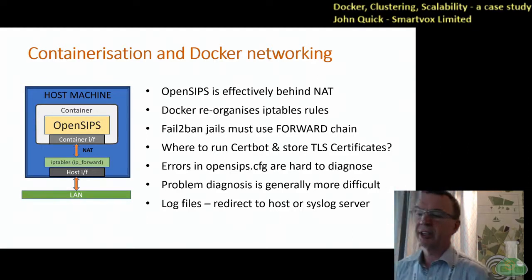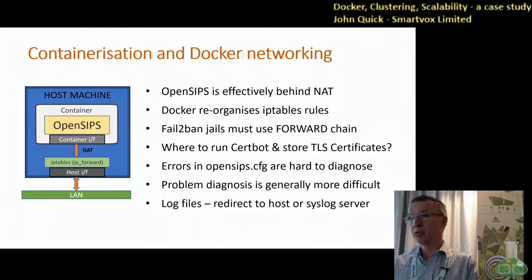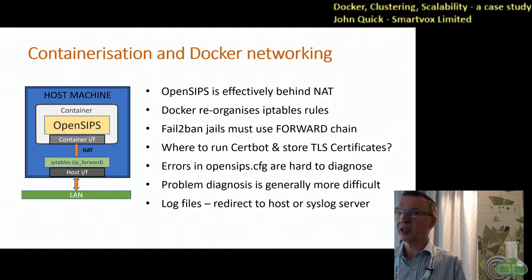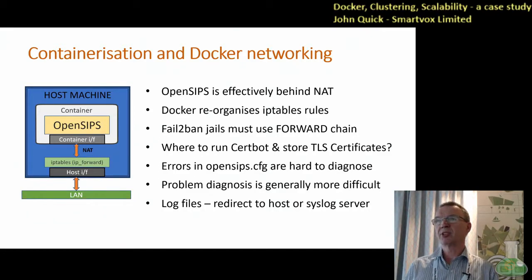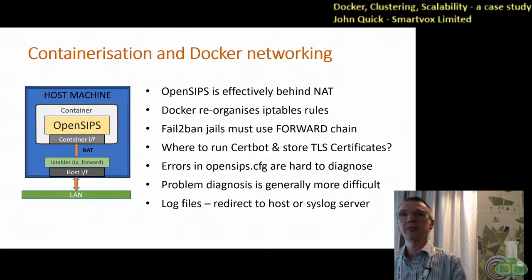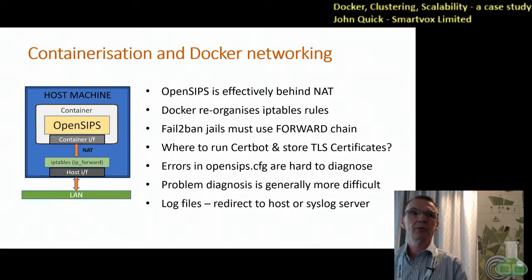The Docker networking really does give you some issues to deal with. Effectively your OpenSIPS is behind that NAT. It reorganizes iptables, so the Fail2Ban that I was using — you had to put the ban into the FORWARD chain, not into the INPUT chain, which needed a little bit of fiddling with. I had problems with where to put my TLS certificates being fetched by the cert bot. And it's quite difficult diagnosing problems — you really need to get your OpenSIPS CFG file working nicely outside of Docker, and then put it into the Docker container. Because when the application stops, the container stops, so if all your logs are in the container it's pretty tricky to find out what went wrong. But you can redirect the logs — I did that, redirecting the logs to the host server so I could look at them and they would persist even after the container had stopped.